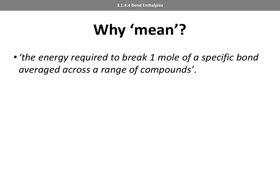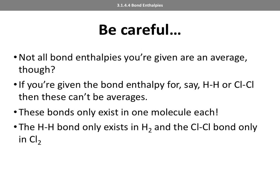Not all bond enthalpies you're given are an average, so you just have to watch out for that. If we think of concrete examples like the H-H bond or the Cl-Cl bond, these can't be averages because these bonds only exist in one molecule each. The H-H bond only appears in H₂ and the Cl-Cl bond only appears in Cl₂, so there is not a range of compounds through which we can average the bond strength. In most cases we'll have a mean bond enthalpy, but be aware there are certain circumstances where it will just be the bond enthalpy.